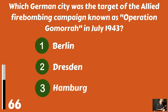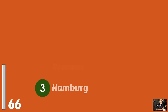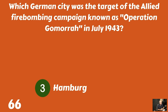Which German city was the target of the Allied firebombing campaign known as Operation Gomorrah in July 1943? Berlin? Dresden? Or Hamburg? And that would be Hamburg.